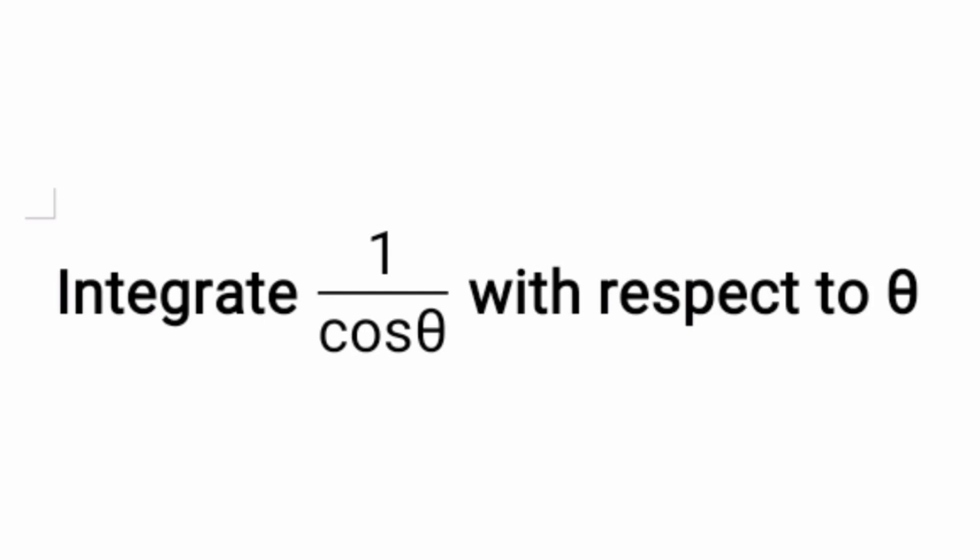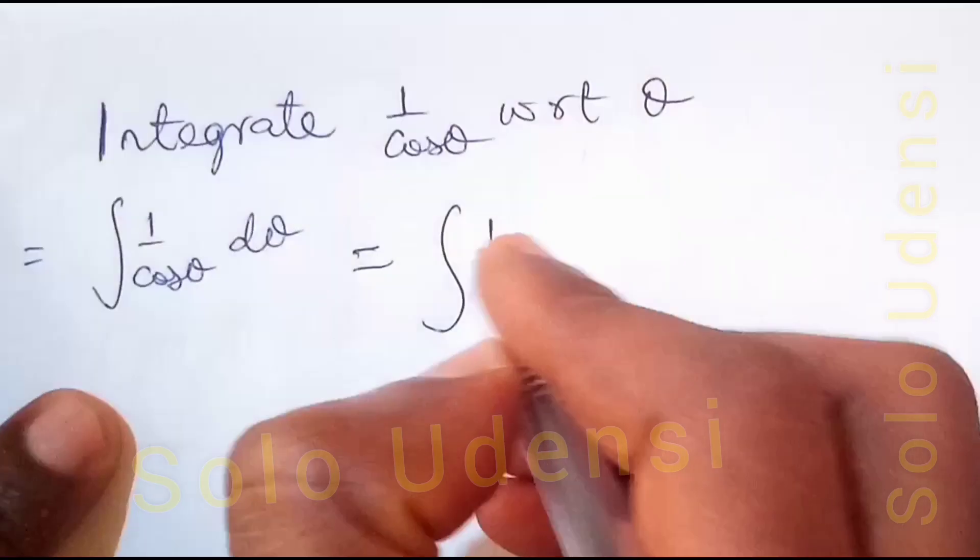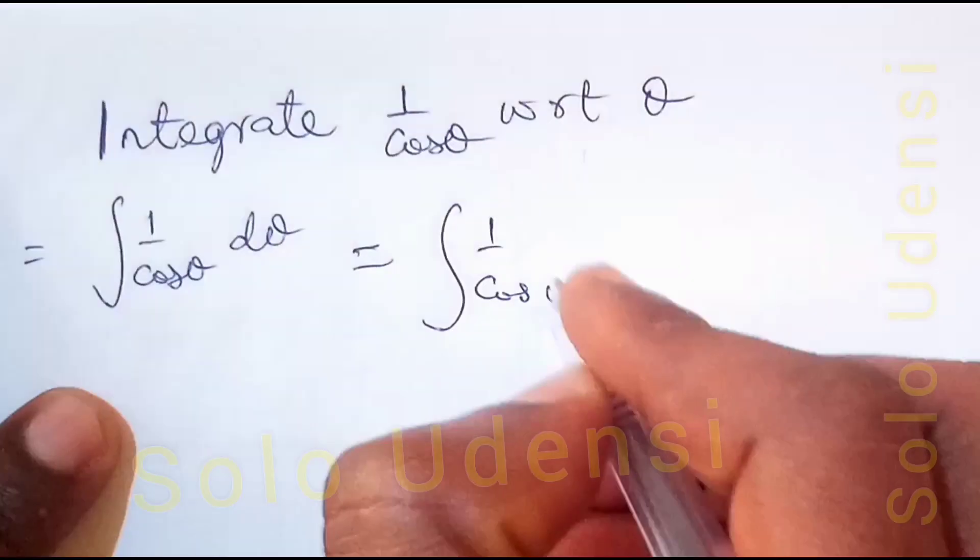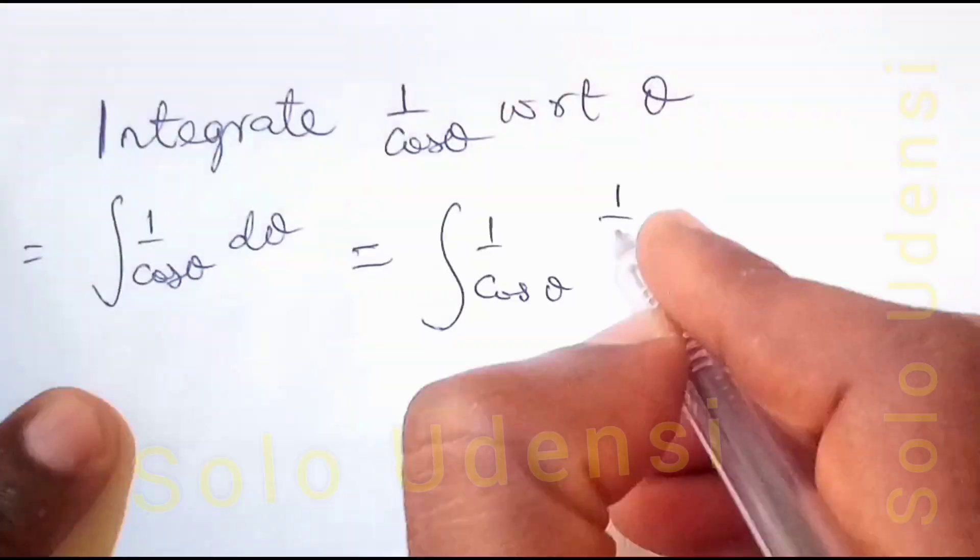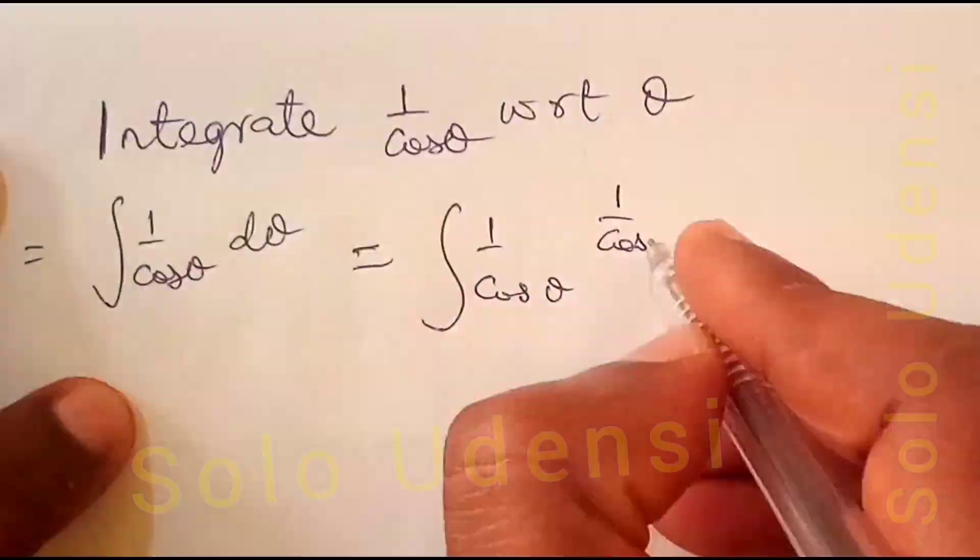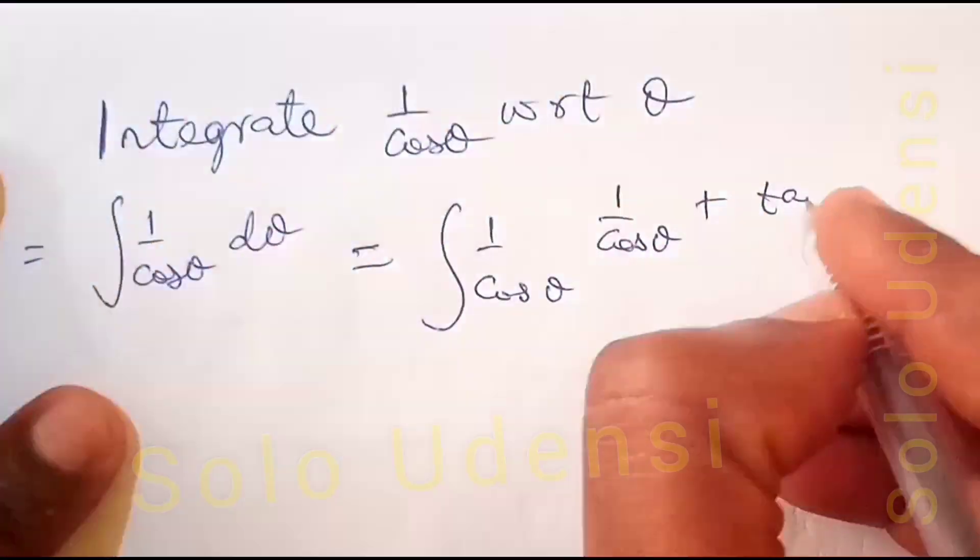Integrate 1 over cos theta with respect to theta. We multiply the denominator and numerator by 1 over cos theta plus tan theta.